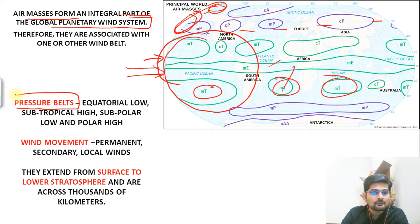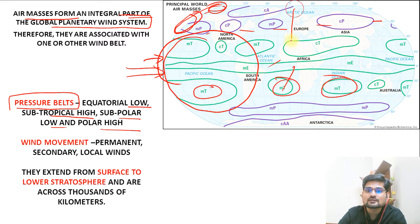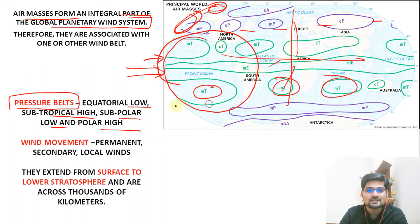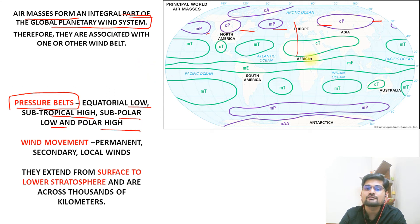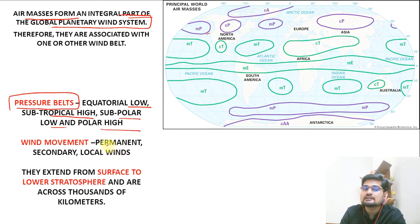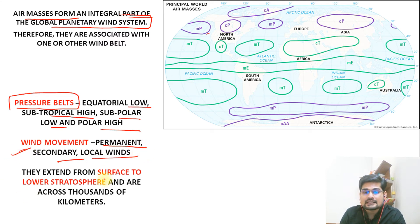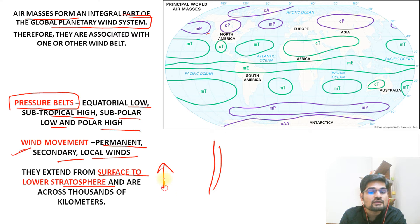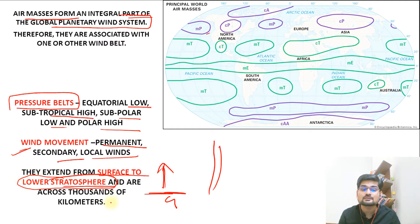The important factors associated with air mass formation are: first, pressure belts — equatorial low, subtropical high, subpolar low, and polar high across these latitudes. That is most important because of which the wind blows and moves from one place to another. Second, the nature of wind movement — permanent winds, secondary winds, local winds. Third, the vertical extent from the surface to the lower stratosphere, spanning thousands of kilometers — that is the range of their influence.